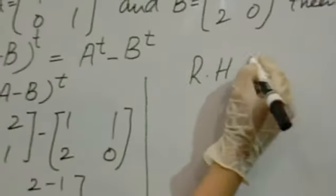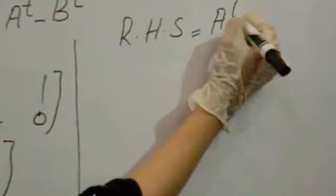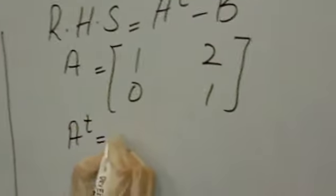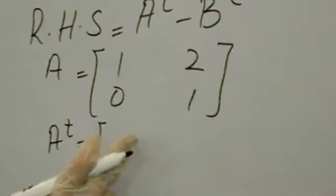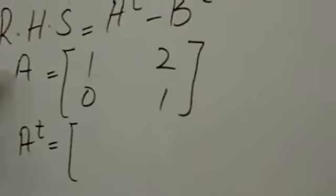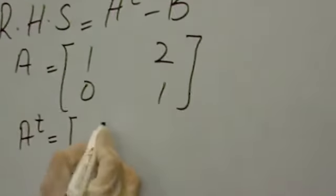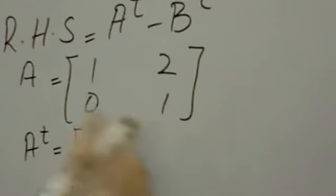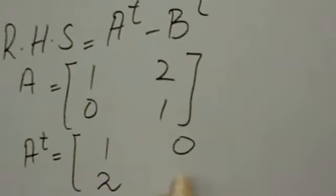Now find out right hand side, A transpose minus B transpose. So we have matrix A: 1, 0, 2 and 1. Find out A transpose. Convert rows into column or column into rows. First row into first column: 1 and 2. Second row, second column: 0, 1.